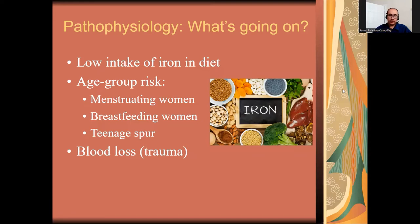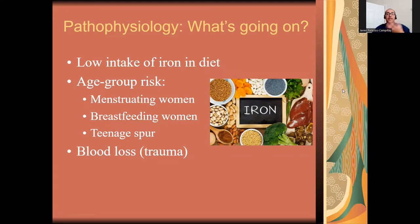Breastfeeding women are another group that tends to have low iron, because a lot of the nutrients that pregnant and lactating women store go to the baby — breastfeeding is no different. And then we have the teenage growth spurt. Teenagers, especially females showing their first signs of menstruation, are already prone, but because of the growth spurt they're going to need more iron in their diet to meet all metabolic needs. A growth spurt requires more iron than normal, and this applies to both males and females in their teenage years.